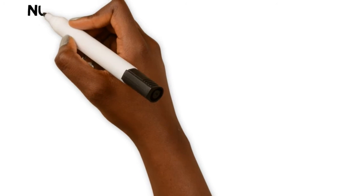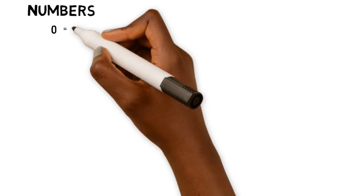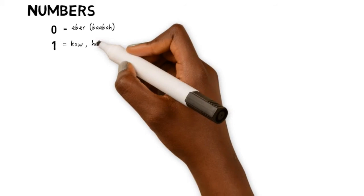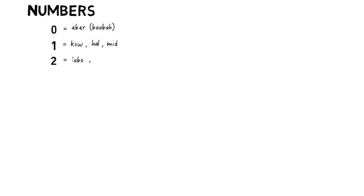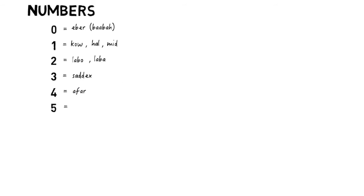Math is about numbers and we start off with the numbers. Keeping in mind that Somali has different dialects, these are what they will sound like. Zero is 'Eber,' but when you're talking to a kid you can just say 'Baba.' One is 'Kou,' 'Hal,' or 'Mid.' Two is 'Labo.' Three is 'Sada.' Four is 'Afar.' Five is 'Shan.'